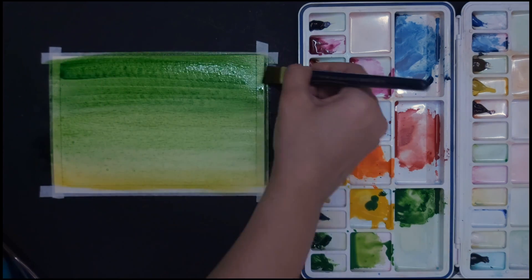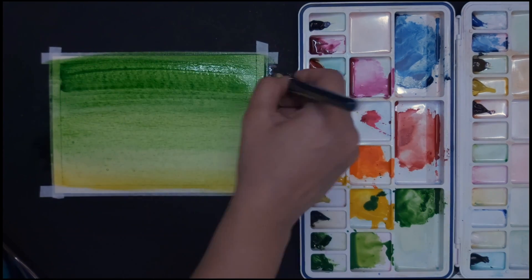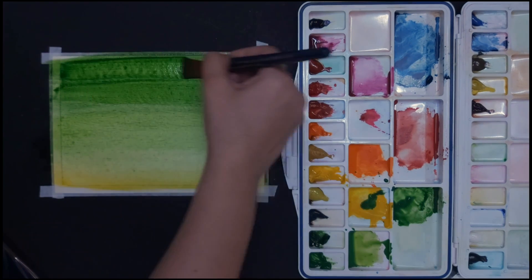To make the top part darker, you can just take a little bit more color to make it more prominent.